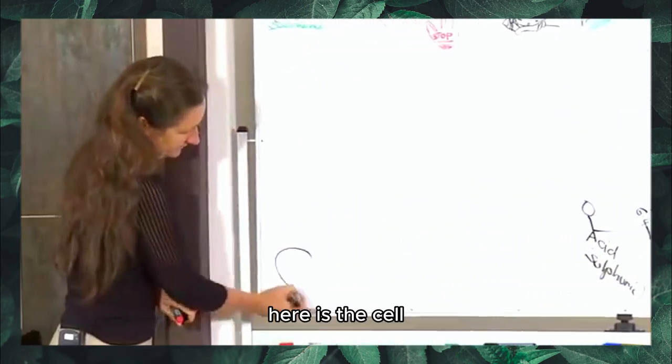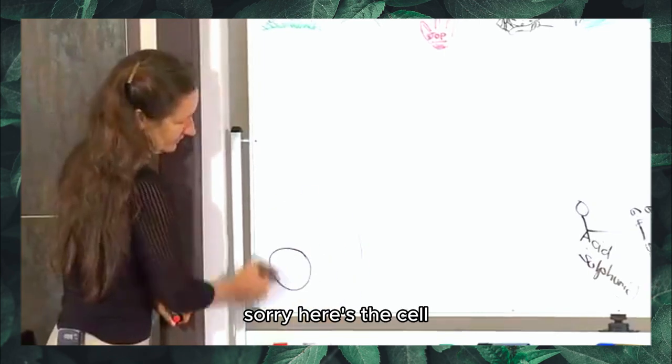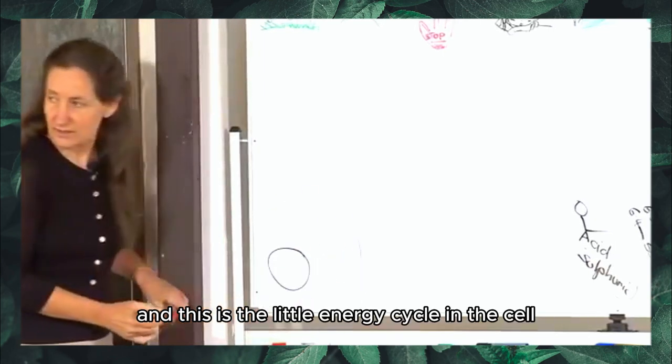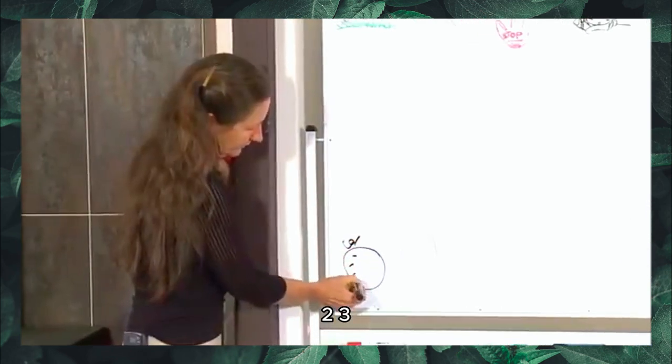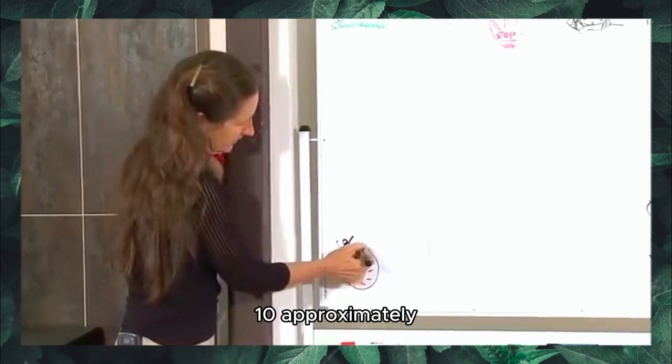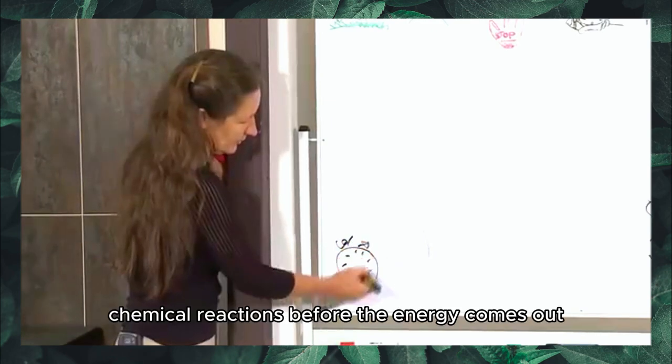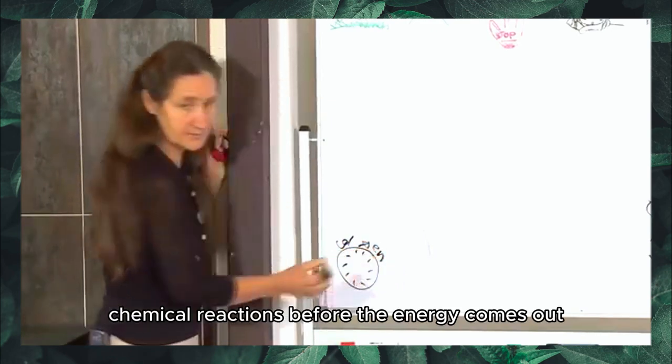Here is the cell and this is the little energy cycle in the cell. The glucose goes in and there are approximately 10 chemical reactions before the energy comes out.